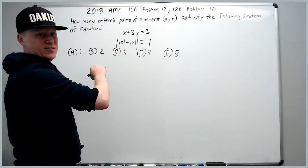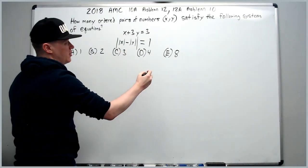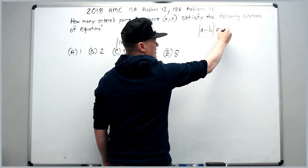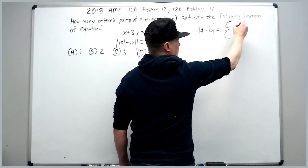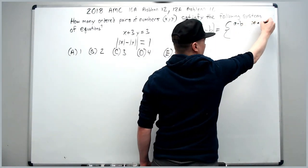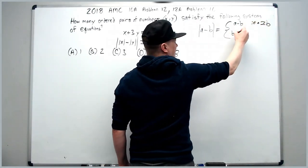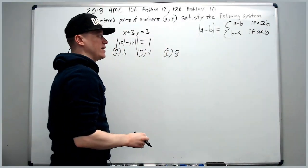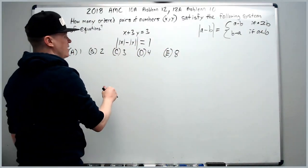So here's what the first method looks like. We're just going to use graphing. You do need to know, for this problem, the absolute value of a difference. The absolute value of a difference is the difference itself, A minus B, if A is greater than or equal to B, and it's B minus A if A is less than B. So we're going to apply that here.